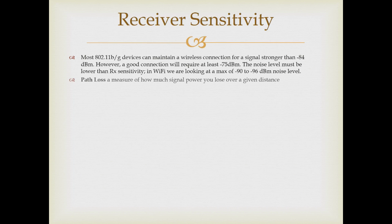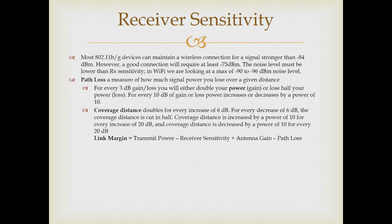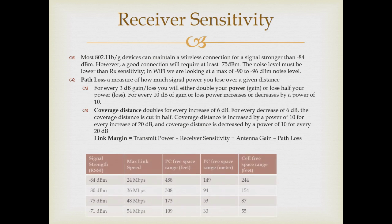Let's talk a little bit about path loss — it's a measure of how much signal power we lose over a given distance. Path loss or gain is measured in decibels (dB). For every 3 dB of loss, we halve our power. For every 10 dB of loss, we reduce our power by a factor of 10. The same principle holds for coverage distance: for every 6 dB of gain, our coverage distance doubles, and for every 20 dB of gain, our coverage distance increases by a factor of 10. The link margin is the difference between the receiver sensitivity and the actual receive power level. Notice that as the negative receive signal strength indicator (RSSI) gets larger, the maximum link speed decreases.